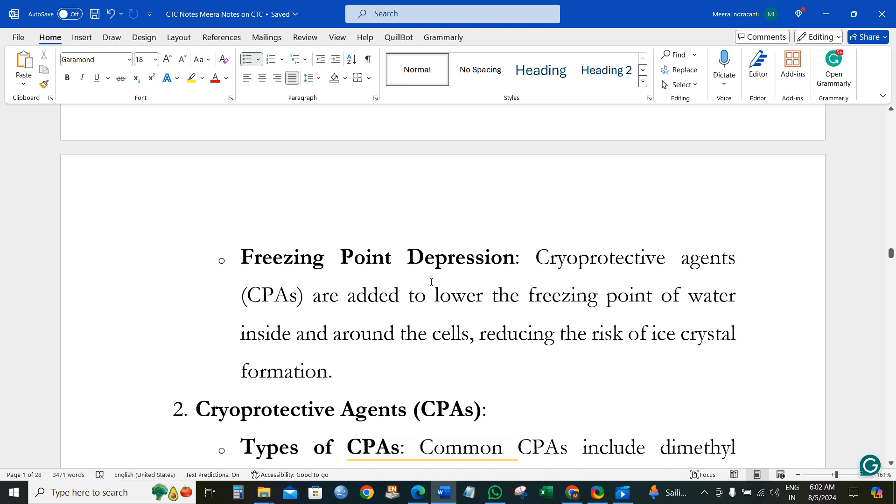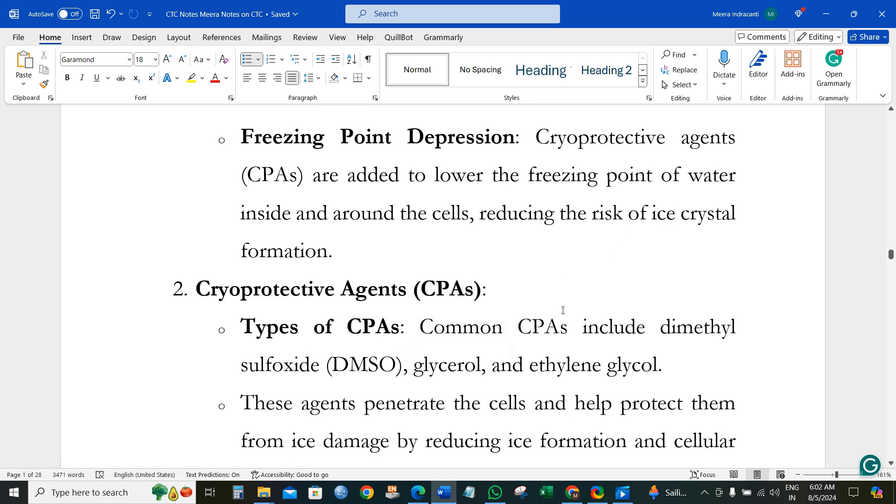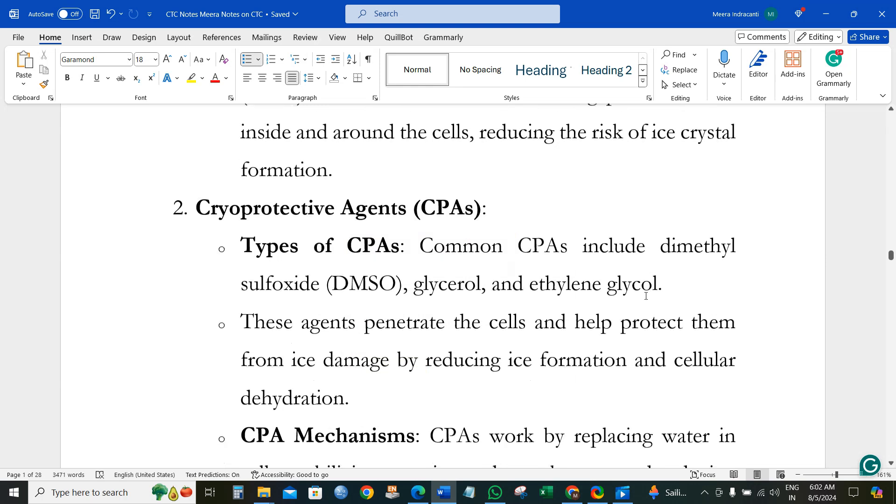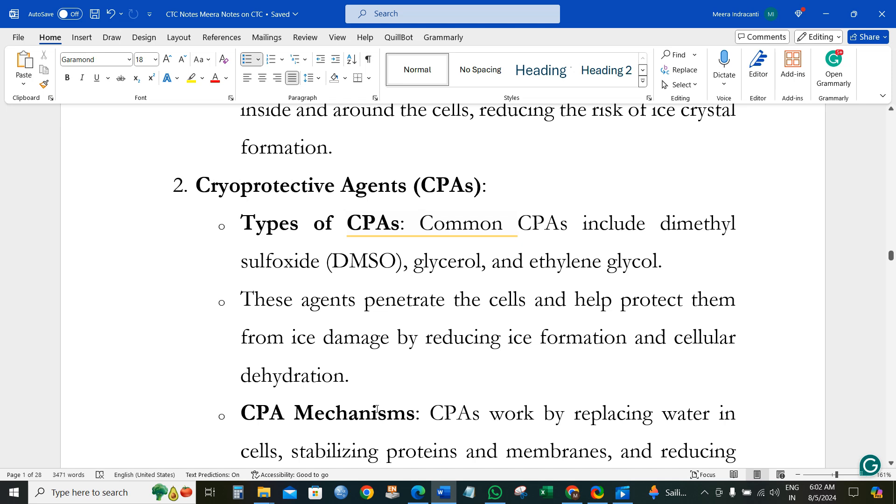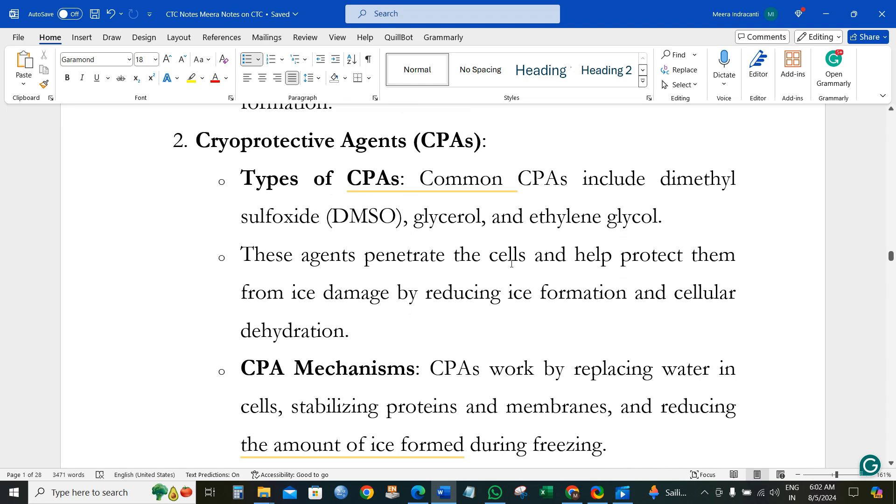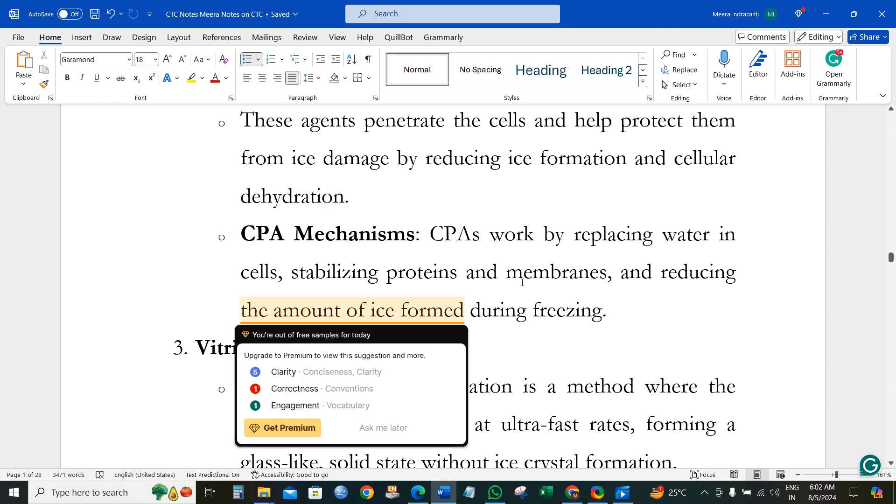To prevent ice crystal formation, we add cryoprotective agents, called CPAs, which lower the freezing point of water inside the cell and reduce the risk of ice crystals that may cause mechanical damage. Different types of CPAs are commonly used, including dimethyl sulfoxide (DMSO), glycerol, and ethylene glycol. These agents penetrate the cells and protect them from ice crystal formation.